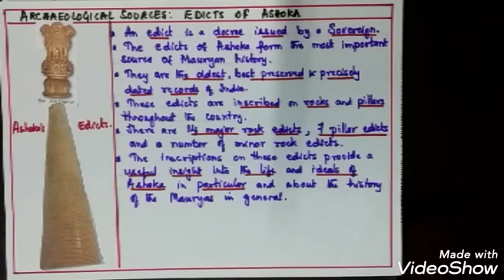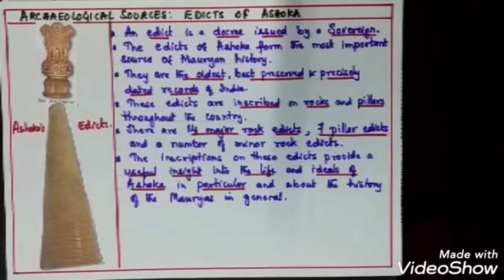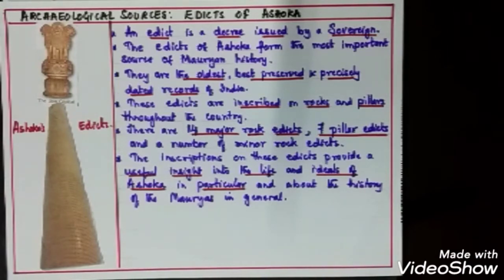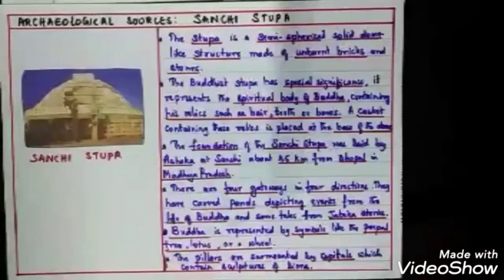These edicts are inscribed on rocks and pillars throughout the country. There are 14 major rock edicts, seven pillar edicts, and a number of minor rock edicts. The inscriptions on these edicts provide a useful insight into the life and ideals of Ashoka in particular, and about the history of the Mauryans in general.